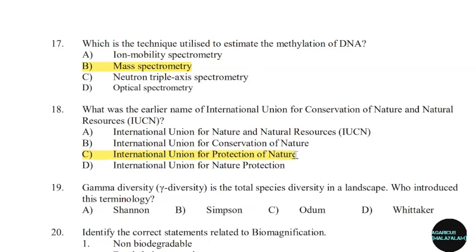19th question: Gamma diversity is the total species diversity in a landscape. Who introduced this terminology? Correct answer: Option D — Whittaker.